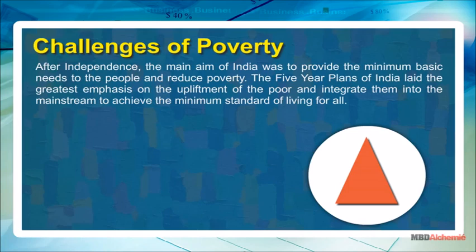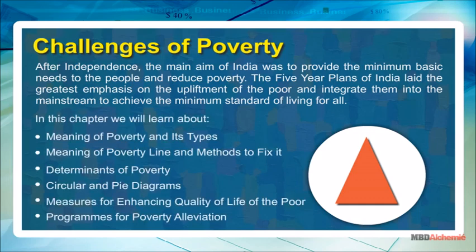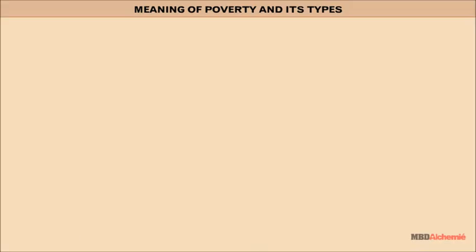After independence, the main aim of India was to provide the minimum basic needs to the people and reduce poverty. The five-year plans of India laid the greatest emphasis on the upliftment of the poor and integrating them into the mainstream to achieve the minimum standard of living for all. In this chapter we will learn about the meaning of poverty and its types, meaning of poverty line and methods to fix it, determinants of poverty, measures to remove poverty, measures for enhancing quality of life of the poor, and programs for poverty alleviation.